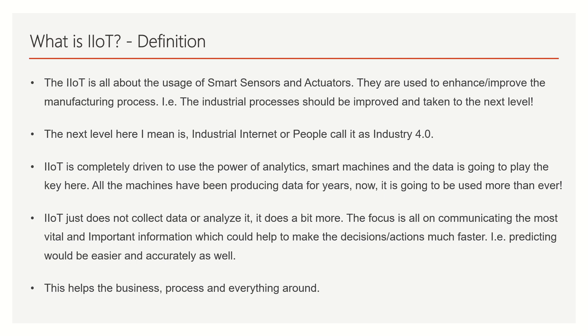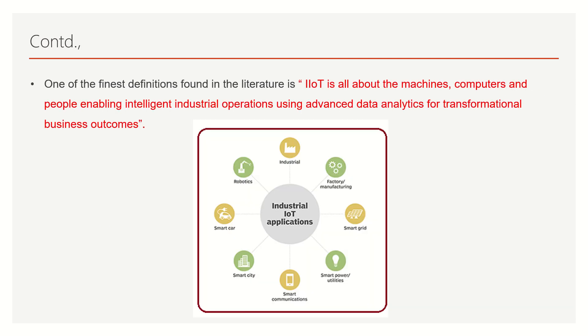IoT is completely driven by the power of data analytics, smart machines, and data playing a much more vital role than ever. All machines have been producing data for years, but we haven't utilized it as it should be — now it will be utilized better through Industrial IoT. IoT doesn't just collect and analyze data; it focuses on communicating the most important and vital information in real time, on time, to take decisions that can avoid damages, increase productivity, and help take business decisions much faster — at a much faster pace than before. This is the revolution.